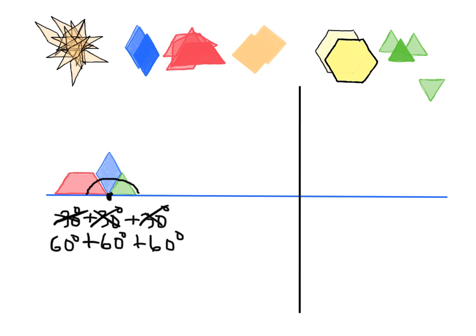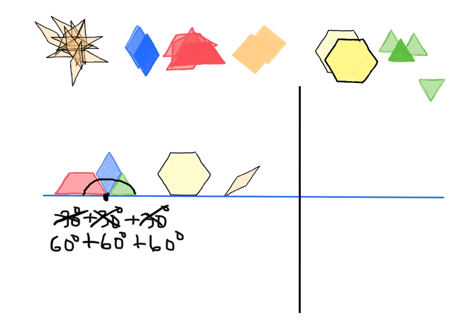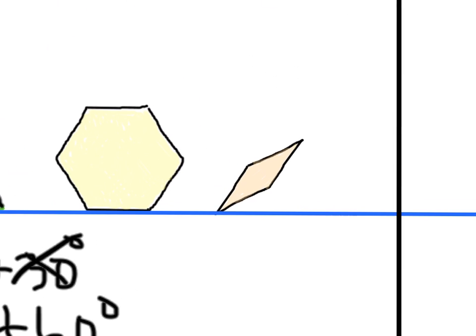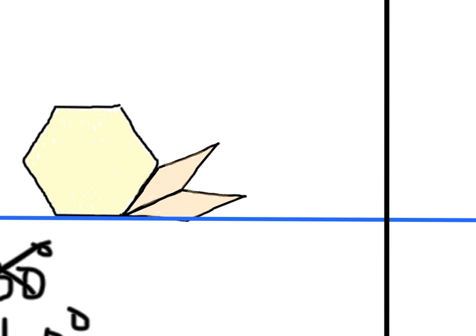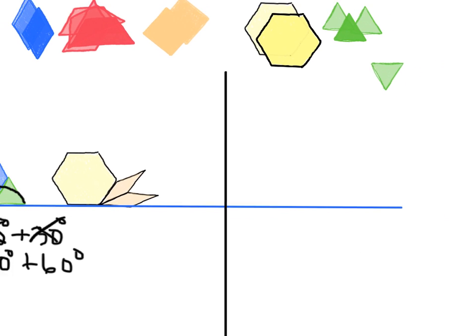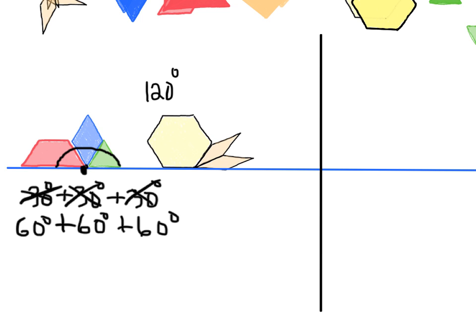That did not have to be our only solution. We could have taken a hexagon and then a couple of these little beige pieces. I'm going to zoom in, take this guy, rotate it, and put him right here. Then zoom out, get another one, zoom in, rotate him — and there we go. I now have another answer for 180 degrees. In this case I would write it as 120 degrees — that's the obtuse angle from the hexagon — plus 30 degrees plus 30 degrees. So 120 plus 30 plus 30 equals 180.